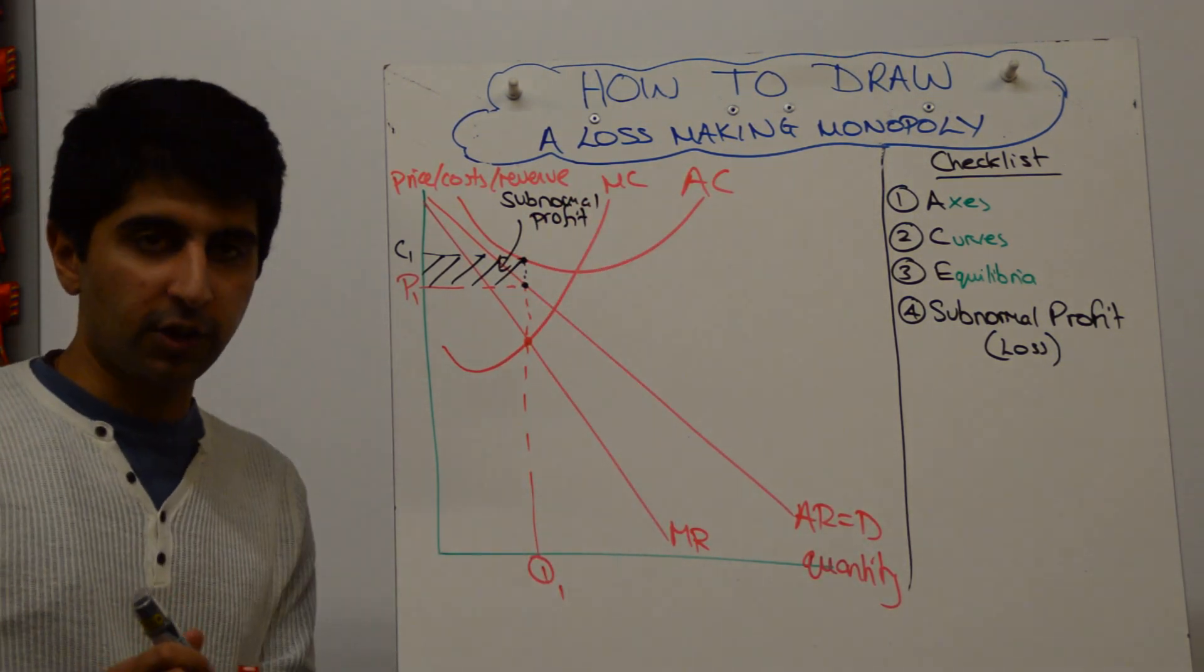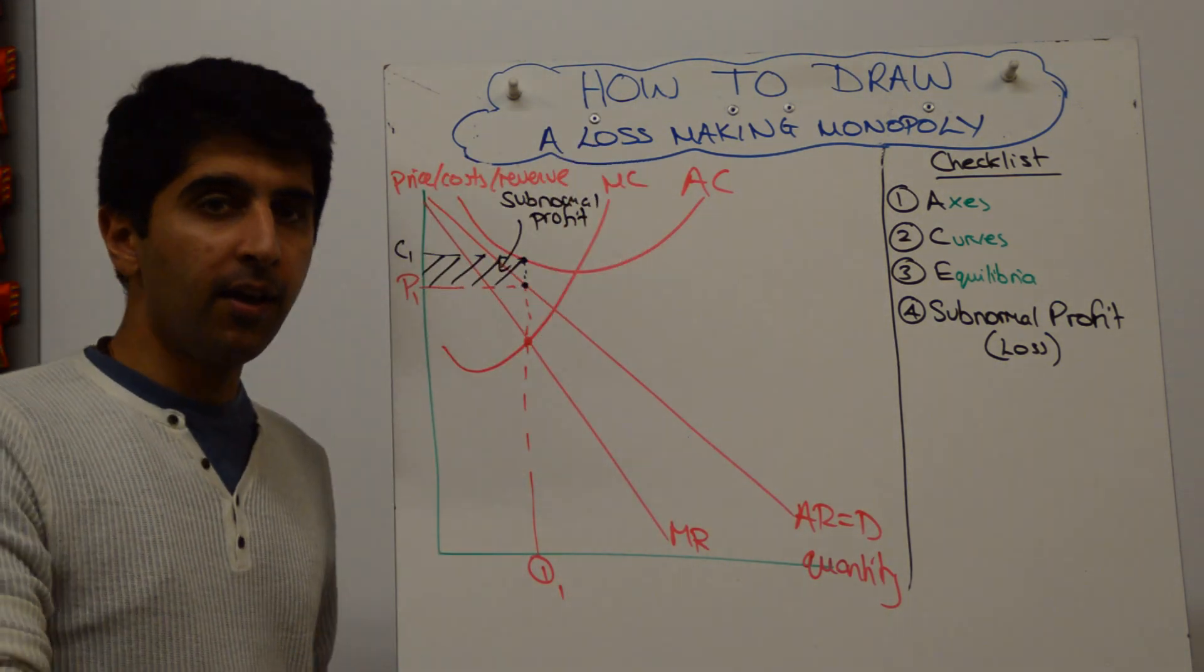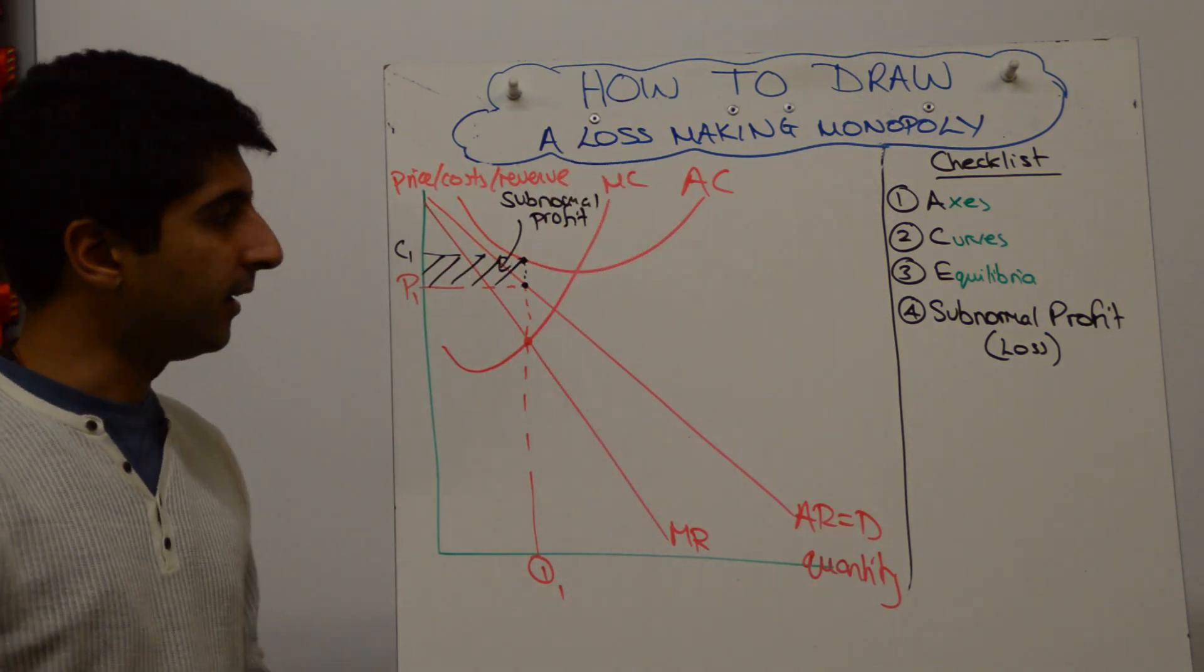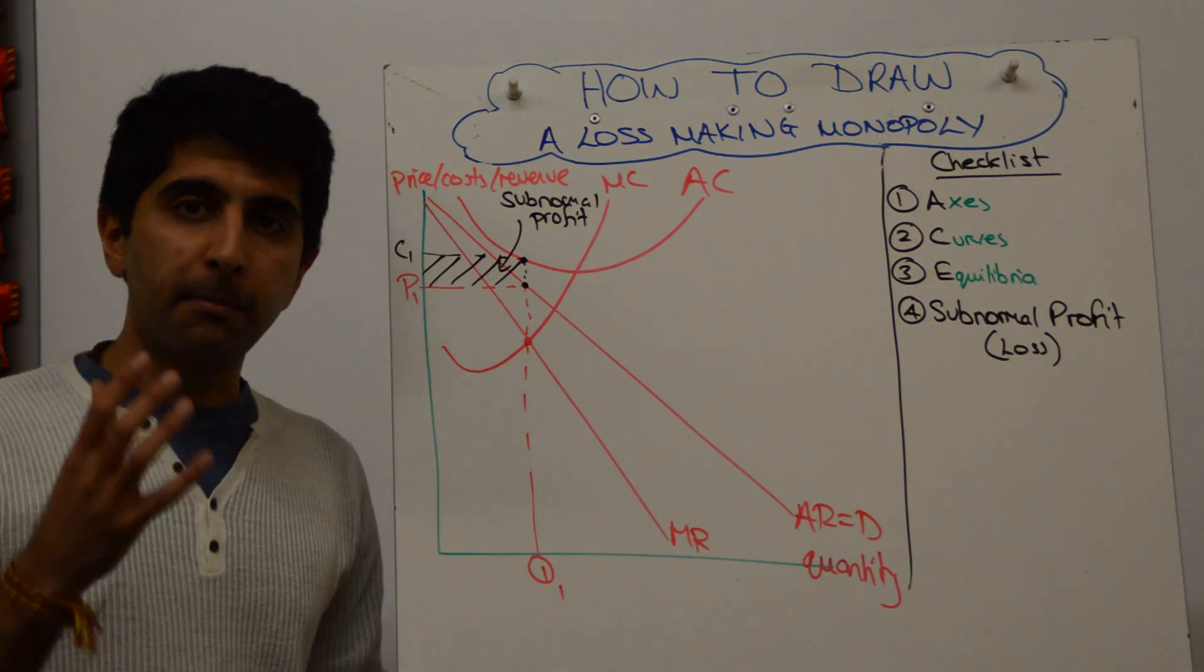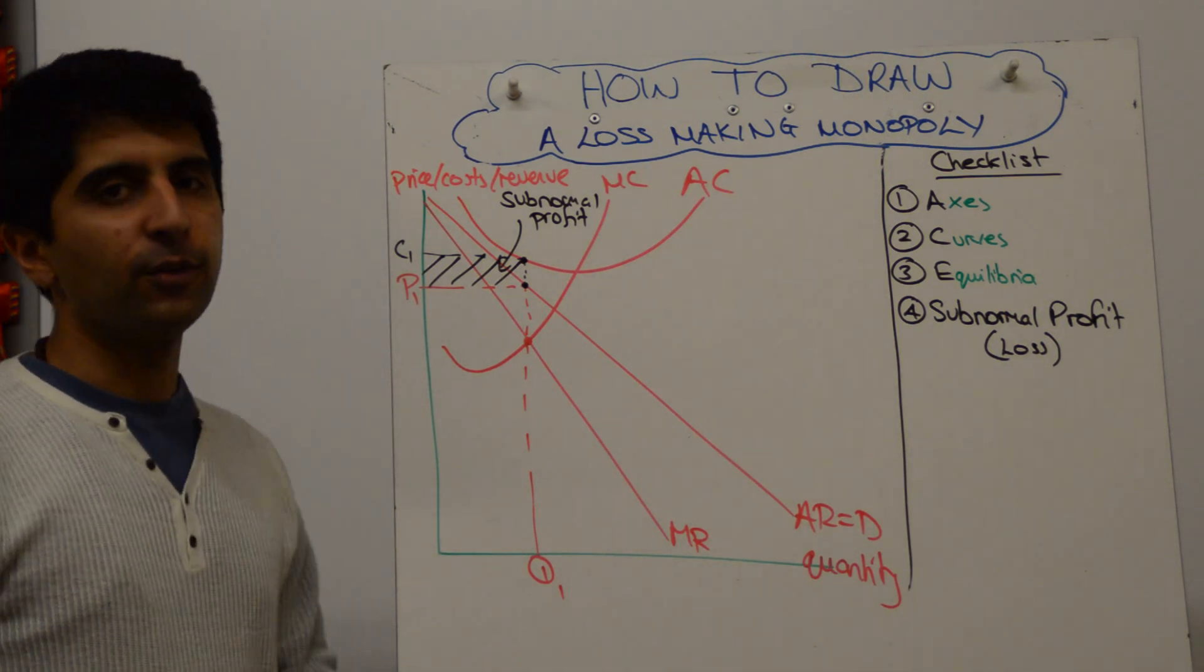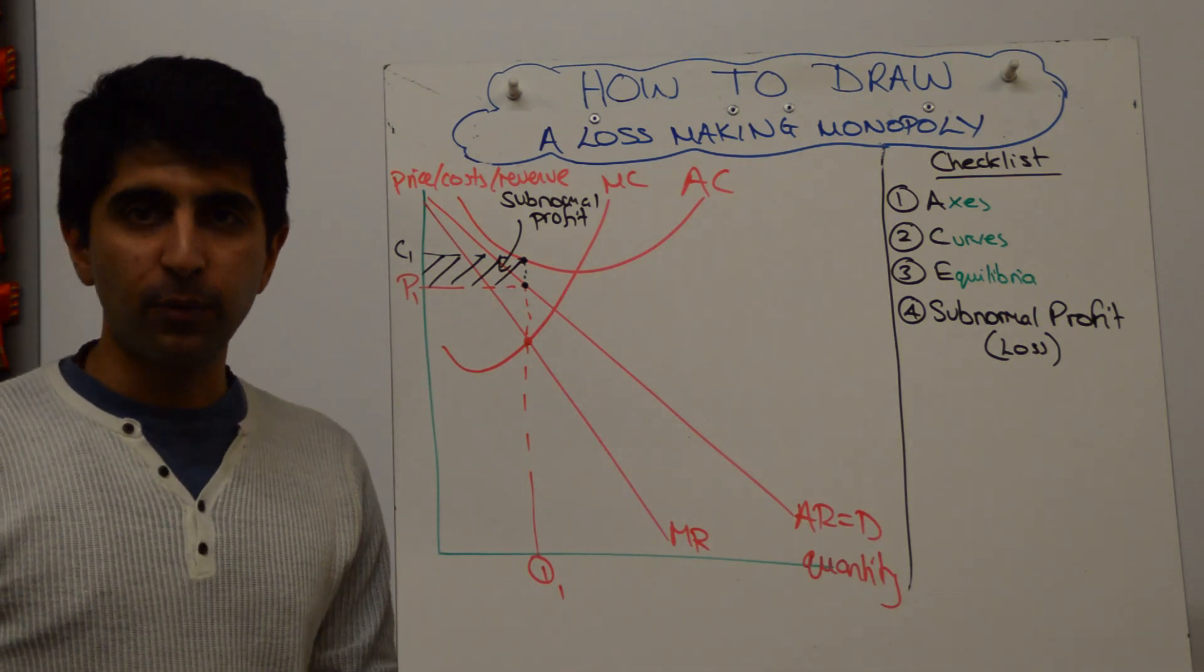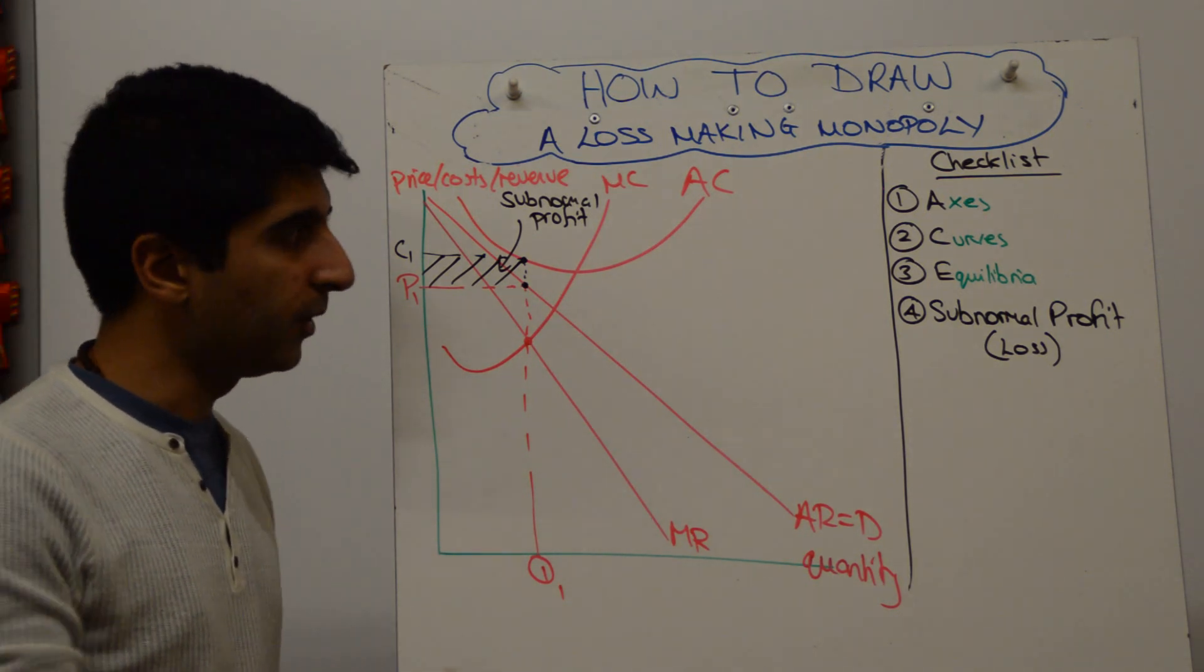Okay, so follow that structure. Repeat: revenue curves first, average cost above AR, MC to cut at its lowest point. MC equals MR is the profit maximization point, which gives you the quantity. Read the price off the AR curve, work out your level of profit, which here is a subnormal profit. AC is greater than AR, and we are done with the diagram.